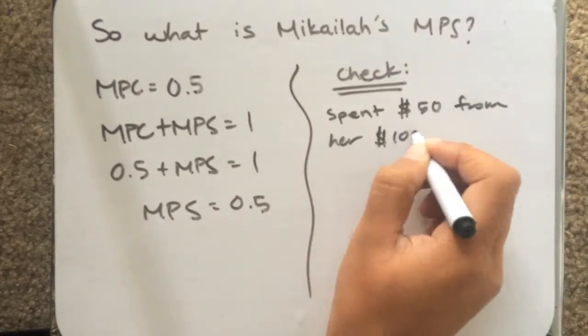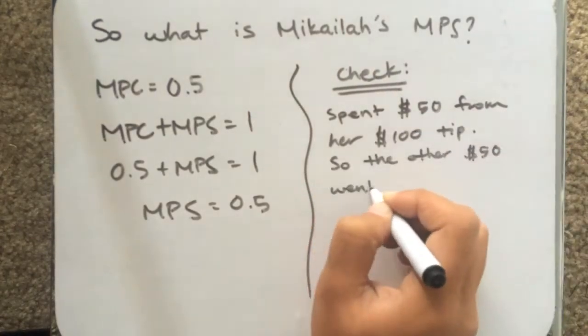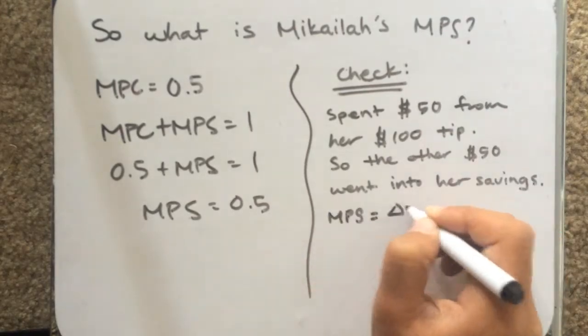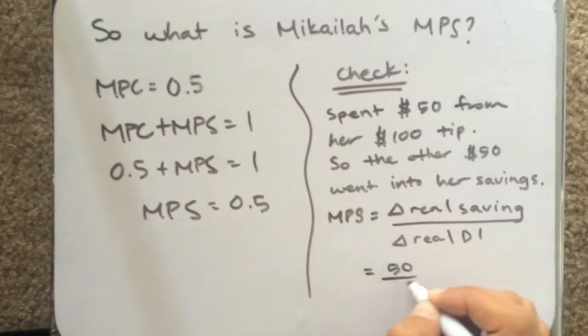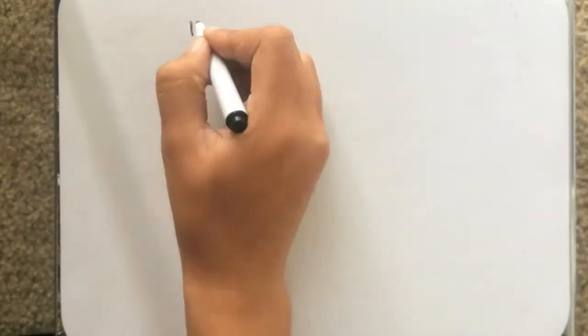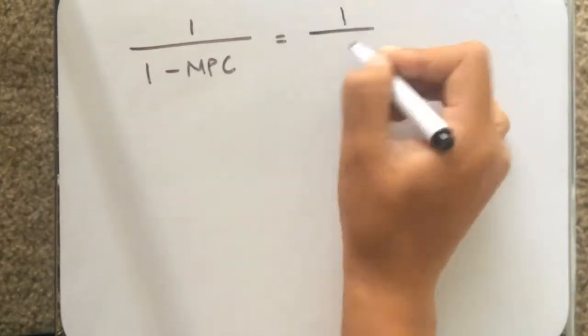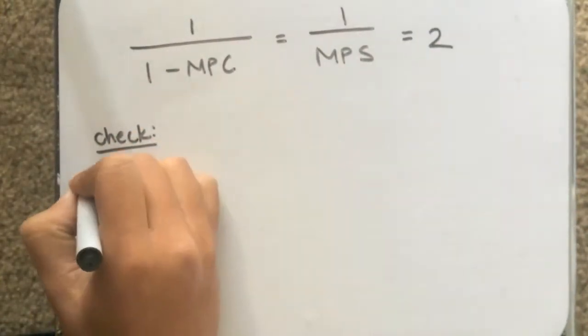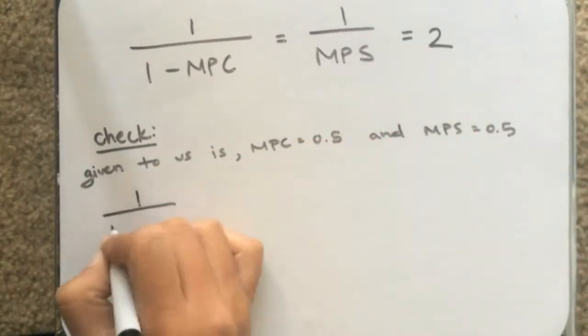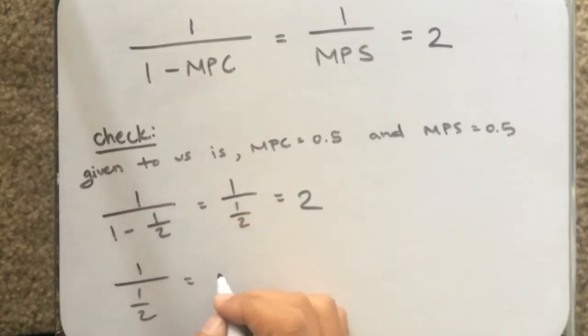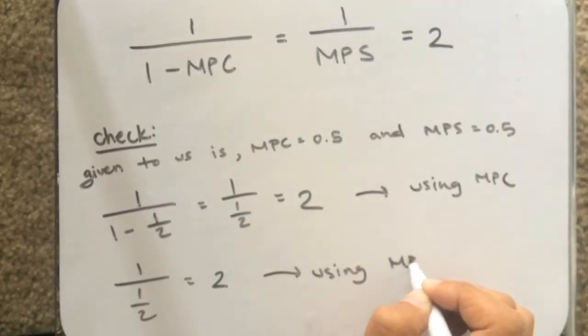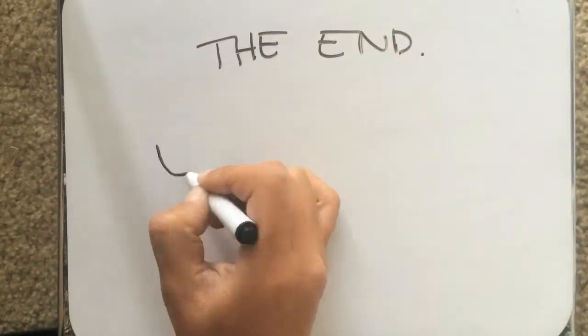So she spent her $50, and we found her MPS as the change in real saving over the change in real disposable income. And now we will show that this equation holds true for both MPC and MPS. If we check it and solve it for both, we see that 1 over 1 minus MPC will equal 2. And if we use MPS, it equals 2 as well. The end.